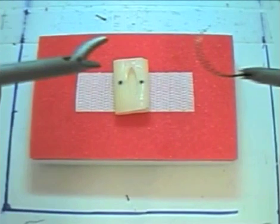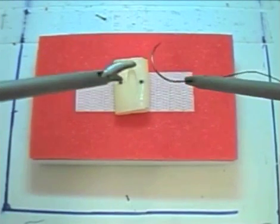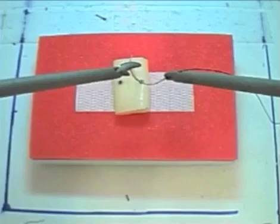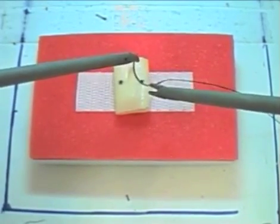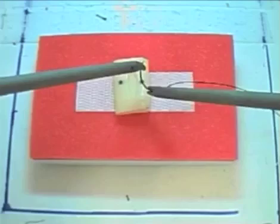Task five, intracorporeal knot. You will be given two needle drivers, one pair of laparoscopic scissors, and a short stitch. Again, the aim is to place the stitch within the area of the black dots.